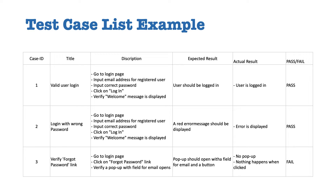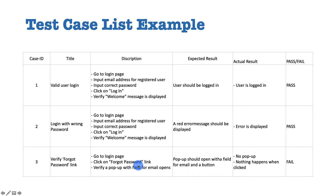Test case number one usually has an ID so you can identify which test case is which. It has a title — for this example, 'Valid User Login.' Then you have a description and steps: go to the login page, input email address, input correct password, click login, verify welcome message is displayed. The expected result is the user should be logged in, and the actual result depends on execution. The second test case is 'Login with Wrong Password,' and another one is 'Verify Forgot Password Link' — you click the link and make sure a pop-up shows up. So you get the idea — these are just three test cases, but you can have a lot more.